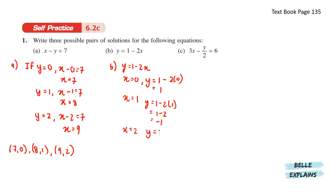If x equals 2, y equals 1 minus 2 times 2. So y equals negative 3. So the possibilities here are (0, 1), (1, negative 1), and (2, negative 3).